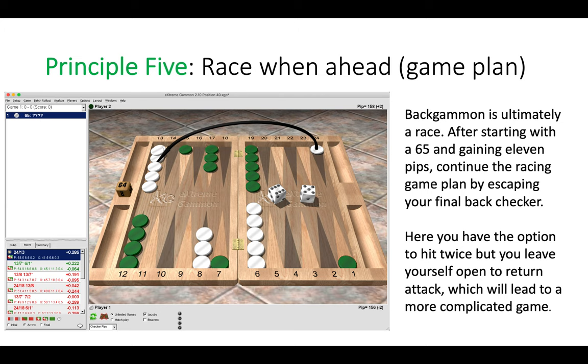Principle five is about game plan. Again, I've done a video on this so please check that out. Race when ahead. So backgammon is ultimately a race. Your objective is to get all your checkers around the board into your home board and then bear them off faster than your opponent. So after starting with a six-five and gaining 11 pips, continue the racing game plan as white by escaping your final back checker.